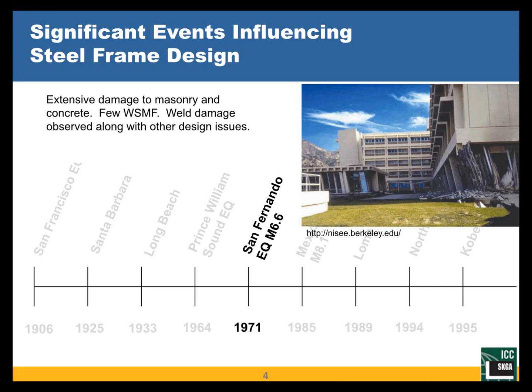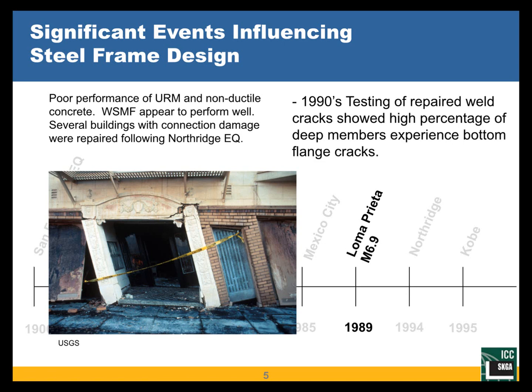Starting with the 1971 event, the majority of the damage that was visually observed was masonry and concrete, so unfortunately the welded steel moment frame didn't get as much scrutiny or attention. There also quite simply were not as many welded steel moment frames available yet. There were some damages observed, and where there were damages to the welds, they were simply repaired and the industry moved on.